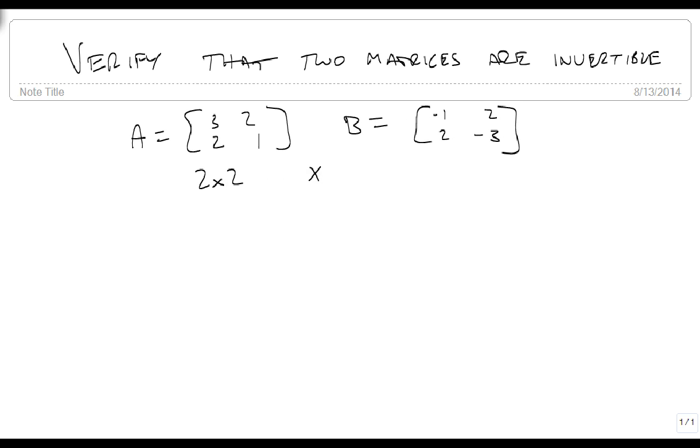So I am taking a 2 by 2, multiplying it by a 2 by 2, so the result will be a 2 by 2. So I'll create my 2 by 2 right here, and the first entry is going to be the first row times the first column, because we are doing A times B here.